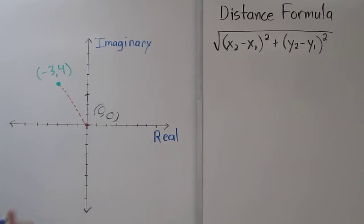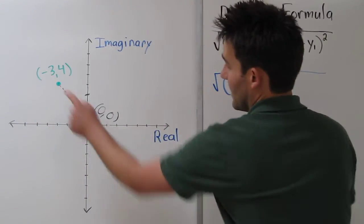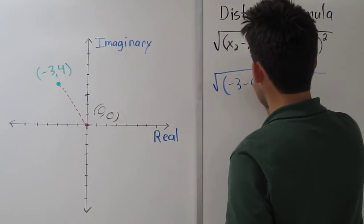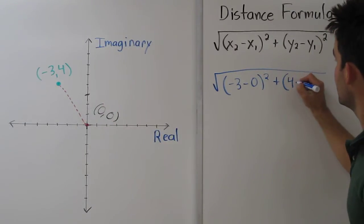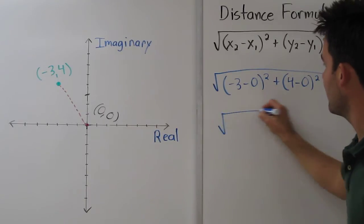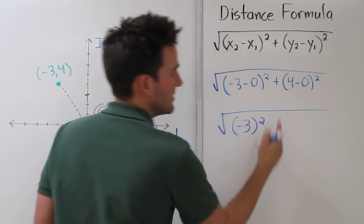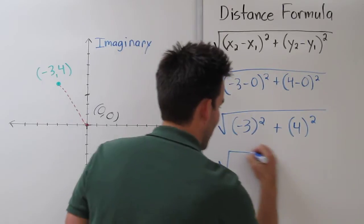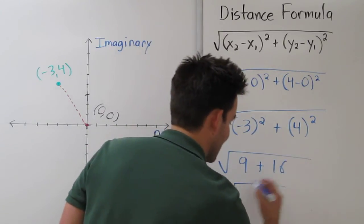Let's plug these into our distance formula, and we get negative 3 minus 0 squared plus 4 minus 0 squared. We end up with negative 3 squared plus 4 squared, which is 9 plus 16, which is 25.